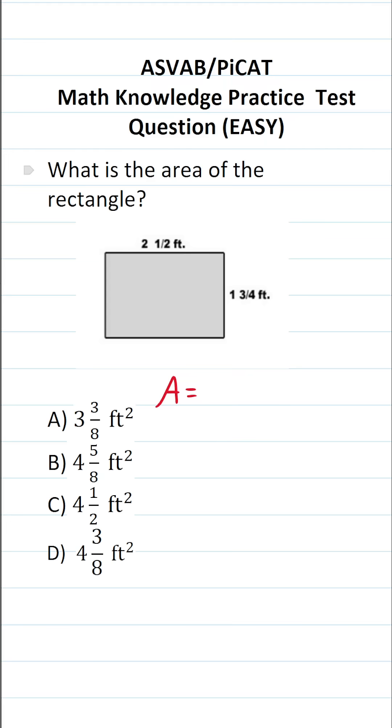The formula to calculate the area of a rectangle is length times width. We can see the length of this rectangle is 2 1/2 and its width is 1 3/4. So let's plug those values in. This becomes 2 1/2 times 1 3/4.